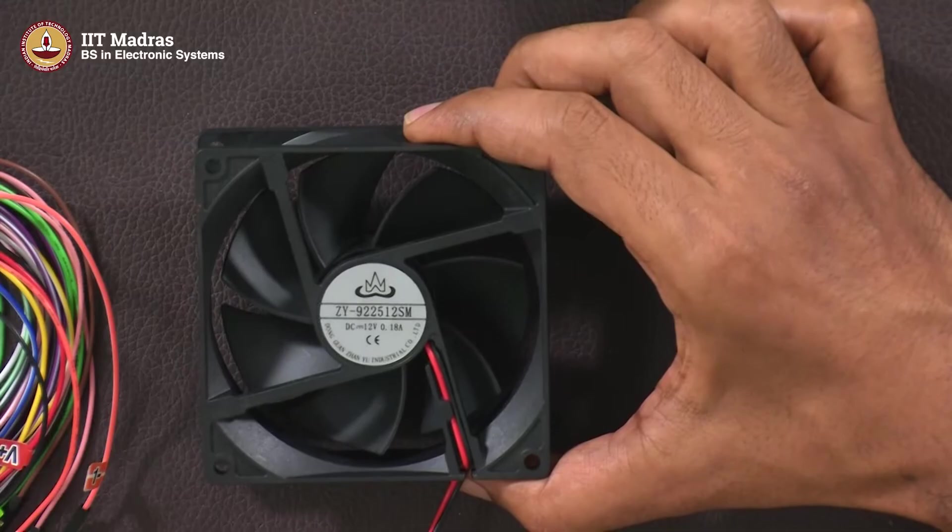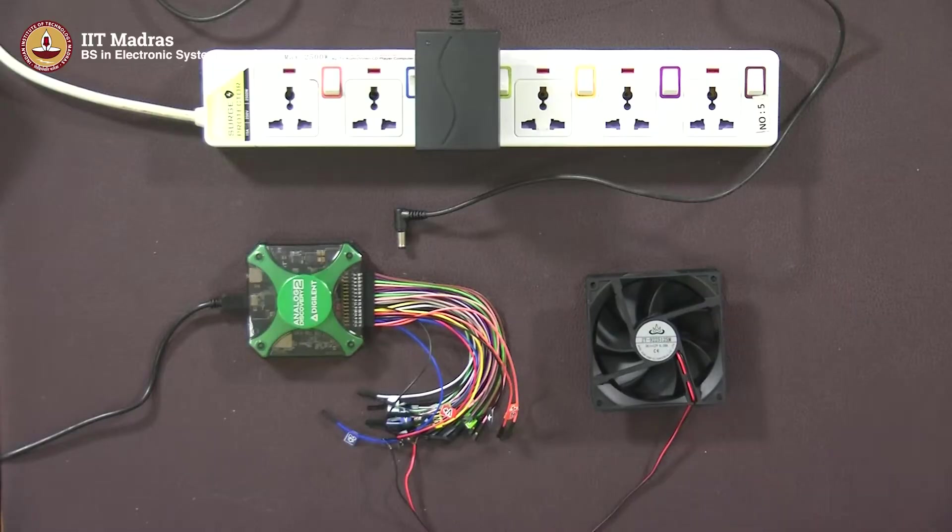So, what you see here, right? Can you read the specification of this? Yeah, DC 12 volt 0.18 ampere. Yeah, so I mean you can easily calculate the wattage by the way from what we did earlier, multiply the volt with current, you will get the wattage and how much energy this fan is going to consume. So, can you connect this to a 12 volt DC supply and show me what happens?